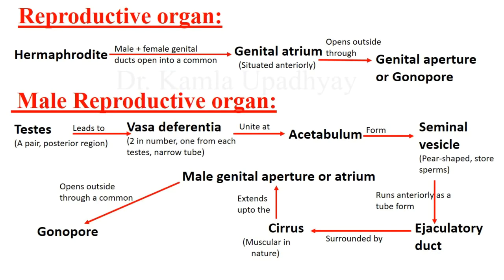To revise: Fasciola hepatica is hermaphrodite — male and female reproductive organs are in the same animal. Male and female genital ducts open to a common genital atrium, which opens to outside through the gonopore. The male reproductive organ has a pair of highly branched testes — anterior and posterior — each connected to individual vasa deferentia.